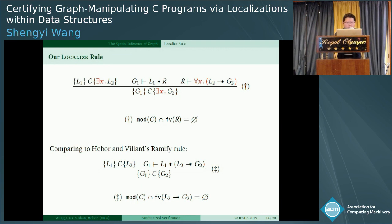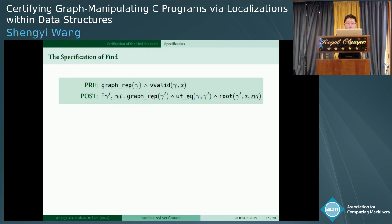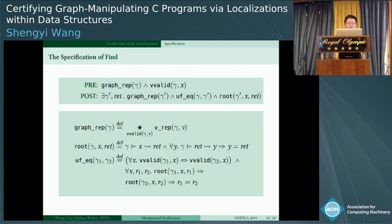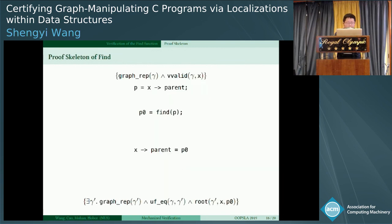Now let's go back to the specification of find. We have seen it before. With all the preparations, we can define it. graph_rep is already given. And the root is defined through reachability: r is reachable from x in gamma, and if r can go anywhere it must be itself. This gives the definition of root. And the equivalence of gamma 2 and gamma 1 is if the same vertex x has roots r1 and r2 in gamma 1 and gamma 2 respectively, they must be the same.